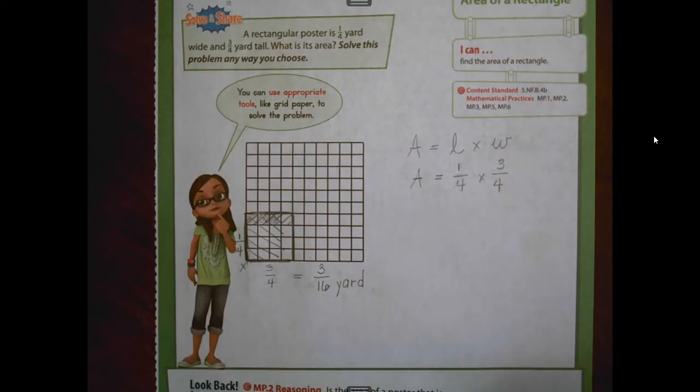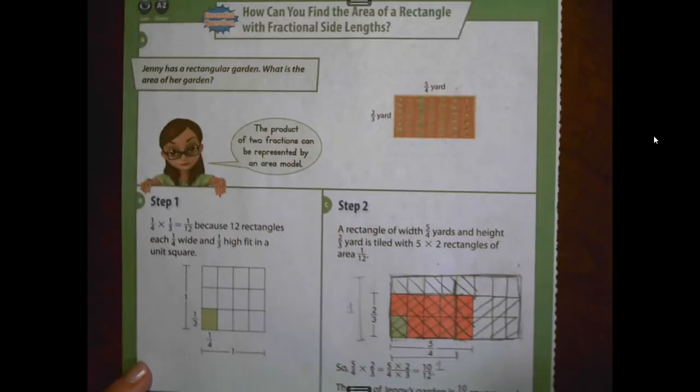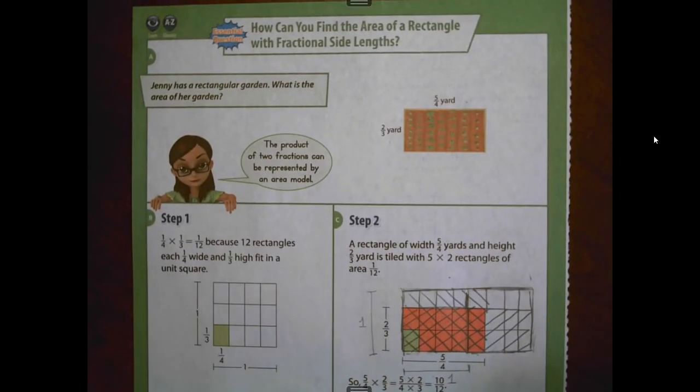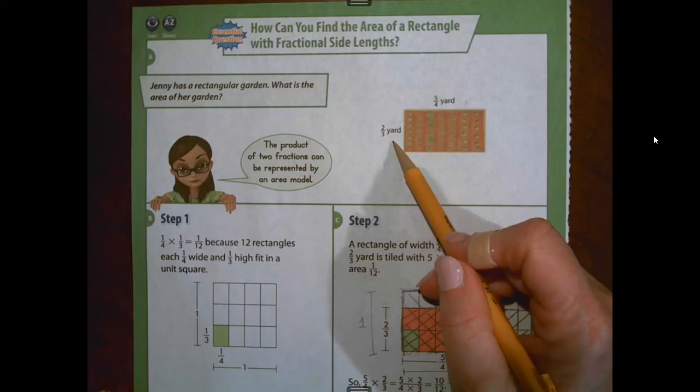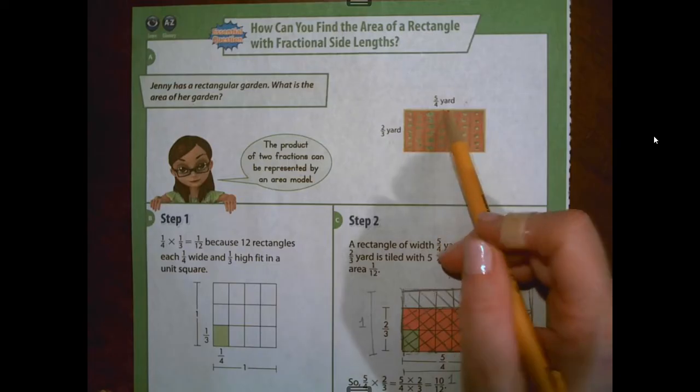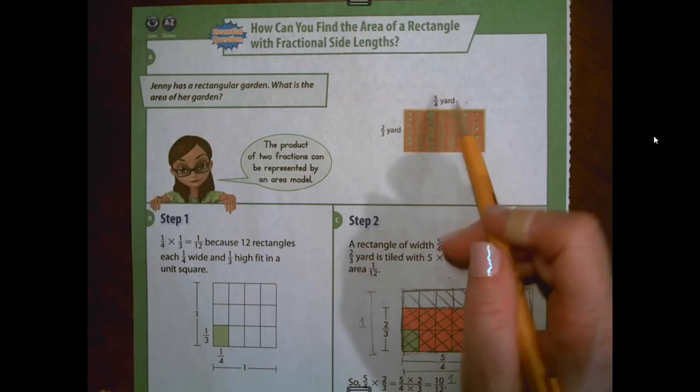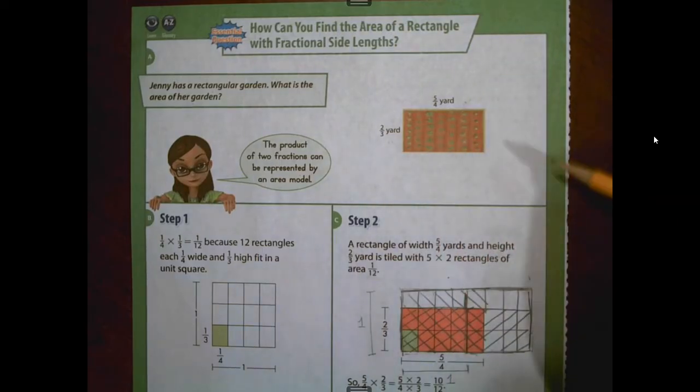Let's go ahead and look at the visual learning example on page 488. You're welcome to watch the video that I have posted in Google Classroom. I'm going to kind of talk you through it because I thought that this one was a little bit confusing. This example is going to be a little bit different than the solve and share because instead of having two fractions that are less than a whole, we actually have one fraction less than a whole. But look at this one. This garden has five-fourths of a yard in one of its side lengths, which means it's greater than a whole.